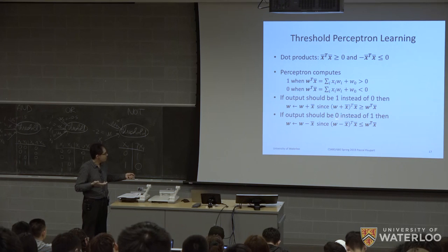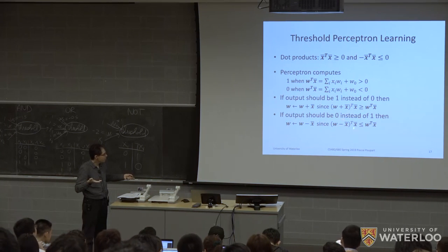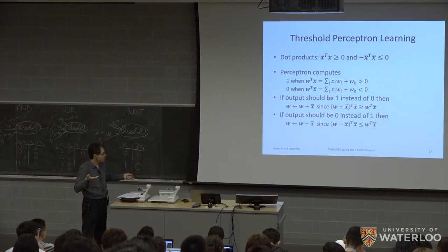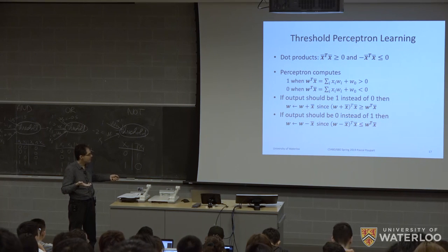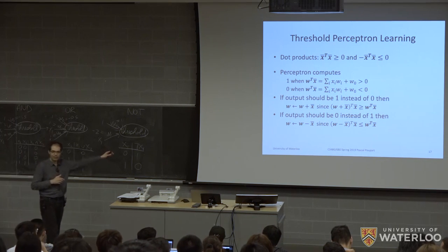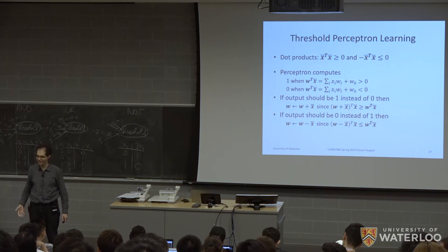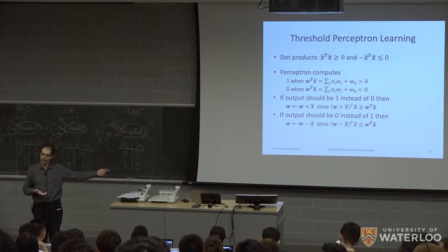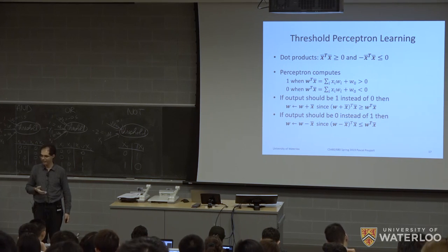If the output should be 0 but is 1, we subtract x. The new weight W−x gives a linear combination (W−x)^T x = W^T x − x^T x, which is smaller than before. If it was positive, there's a chance it becomes negative and we output 0 instead of 1. A student asks if this is like gradient descent — indeed, we can show mathematically that this algorithm is equivalent to gradient descent, as shown on the next slides.